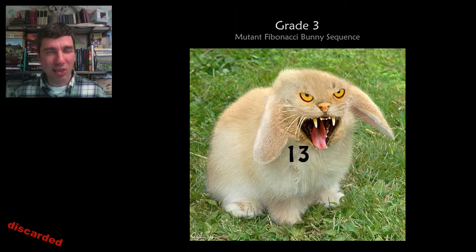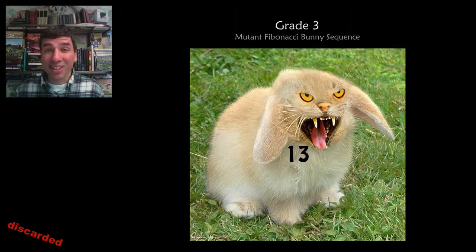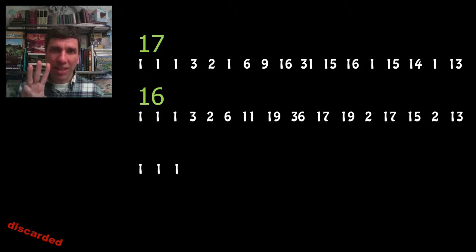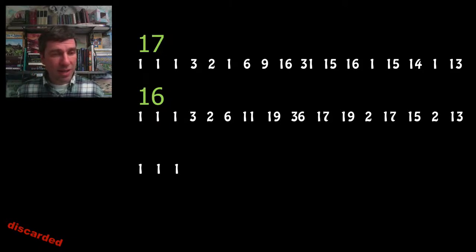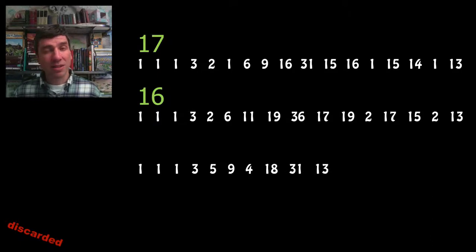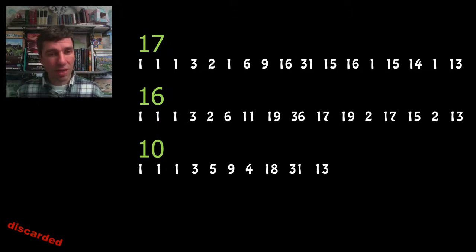The mutant Fibonacci bunny sequence is another great way to get students practicing subtraction. You choose a number — in this case 13. It's a competition to see who can get to that number in the least number of steps. You start off with three ones, and then you can either add together your last three numbers or find the difference of the last two numbers. So: add to get 3, then 3+1+1=5, then 5+3+1=9, then 9 minus 4 equals... wait, 9 minus 5 is 4. Then 9+4+5=18, then 31, then 31 minus 18 is 13. We've been successful in 10 steps — better than previous attempts. But it's not the only way to get to 13 using 10 steps.